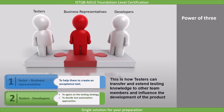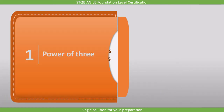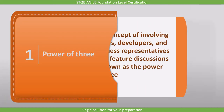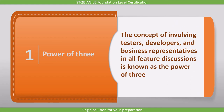This is how testers can transfer and extend testing knowledge to other team members and influence the development of the product. The concept of involving testers, developers, and business representatives in all feature discussions is known as the power of three.